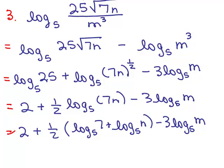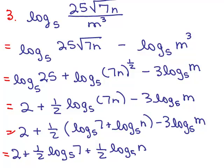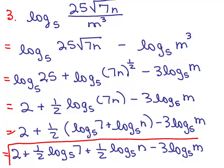And the last thing you might want to do is distribute the 1 half. So it just looks like the sum and difference in numbers, which is what the directions had to do. So I've got 2 plus 1 half log of 7 base 5, plus 1 half log of n base 5, minus 3 log of m base 5. Now, that was a difficult problem, just practicing using the properties of logs.